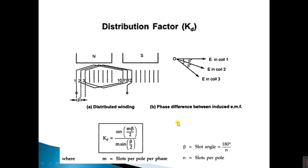Next is the distribution factor. Similar to full pitch coil concentrated winding, which is rare in practice, an attempt is made to use all slots available under a pole for the winding, which makes the nature of the induced EMF more sinusoidal — such a winding is called a distributed winding. For distributed winding, the distribution factor kd equals sin(mβ/2) divided by m·sin(β/2), where m is the number of slots per pole per phase and beta is the slot angle equal to 180/n, where n represents slots per pole.